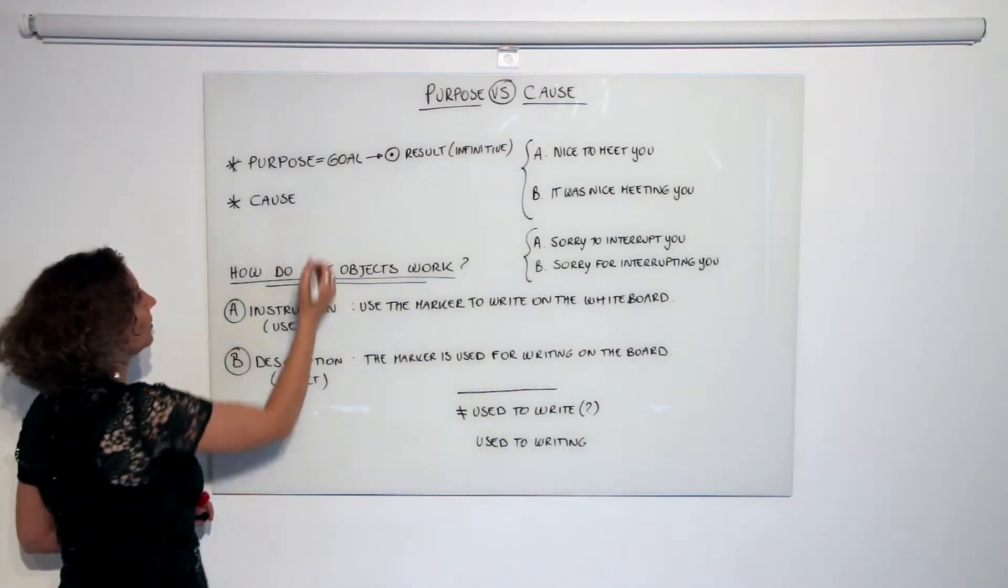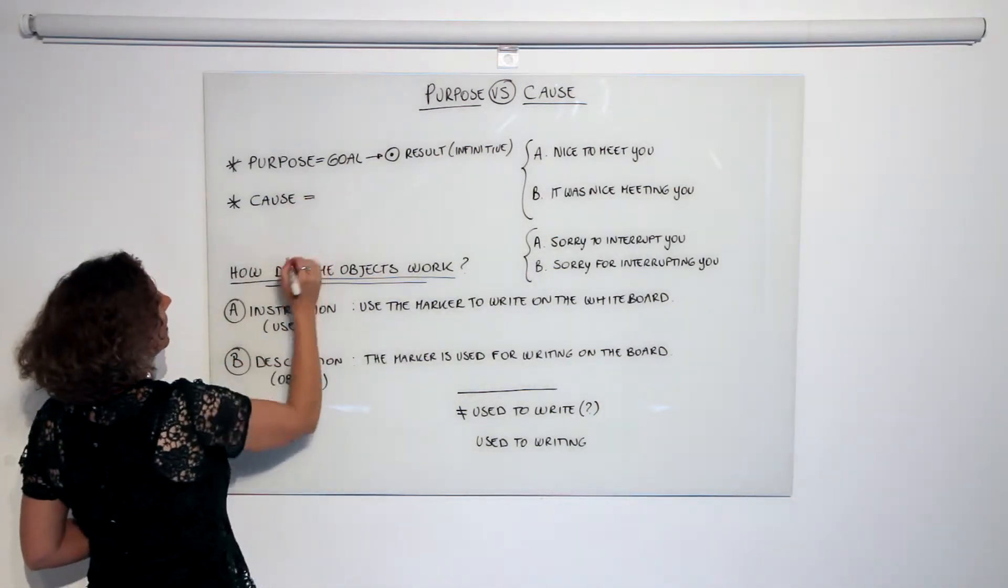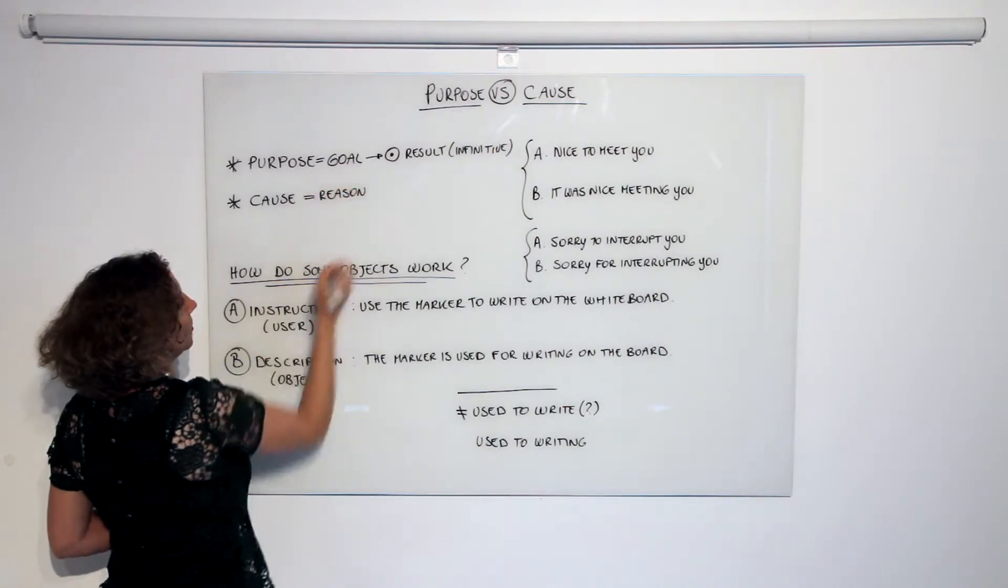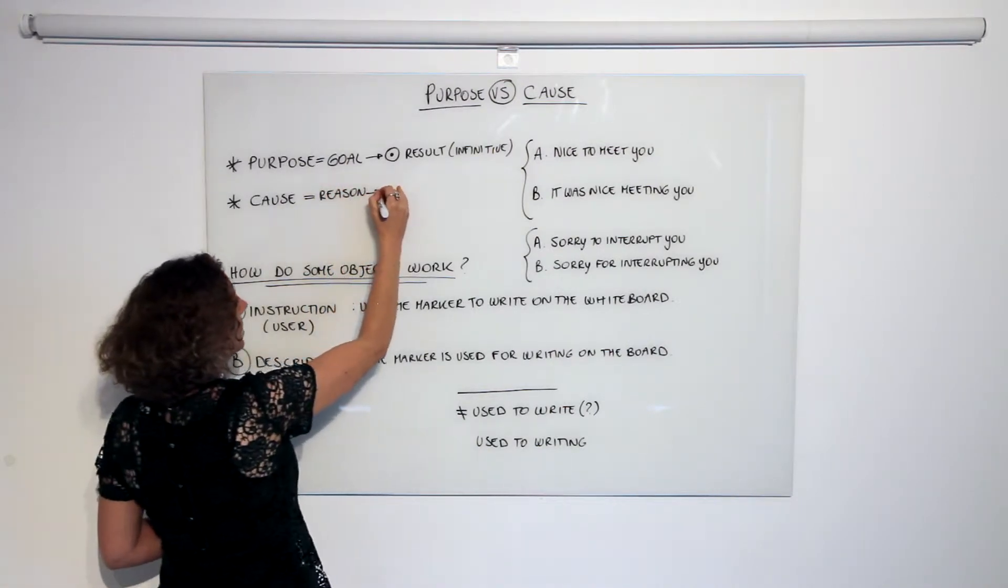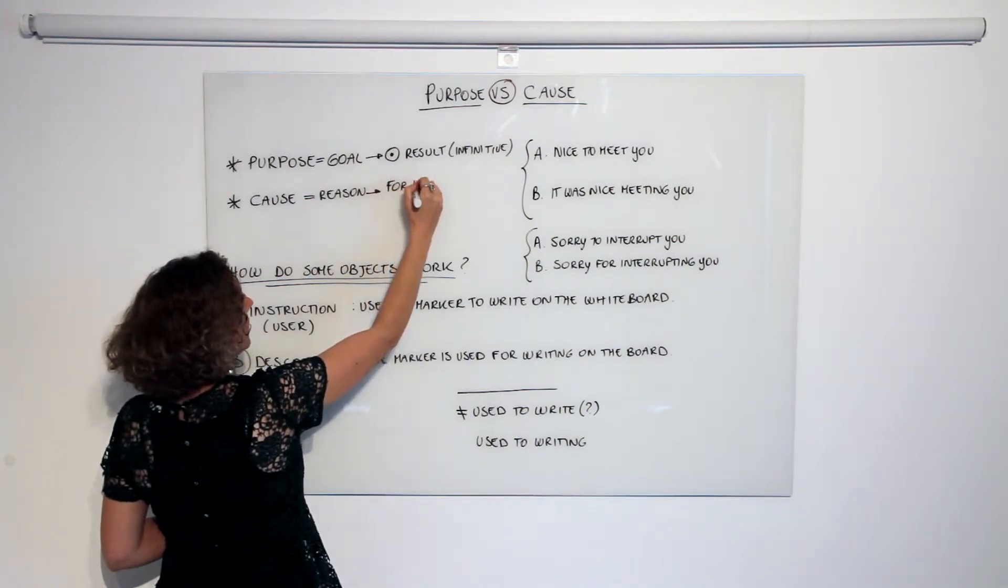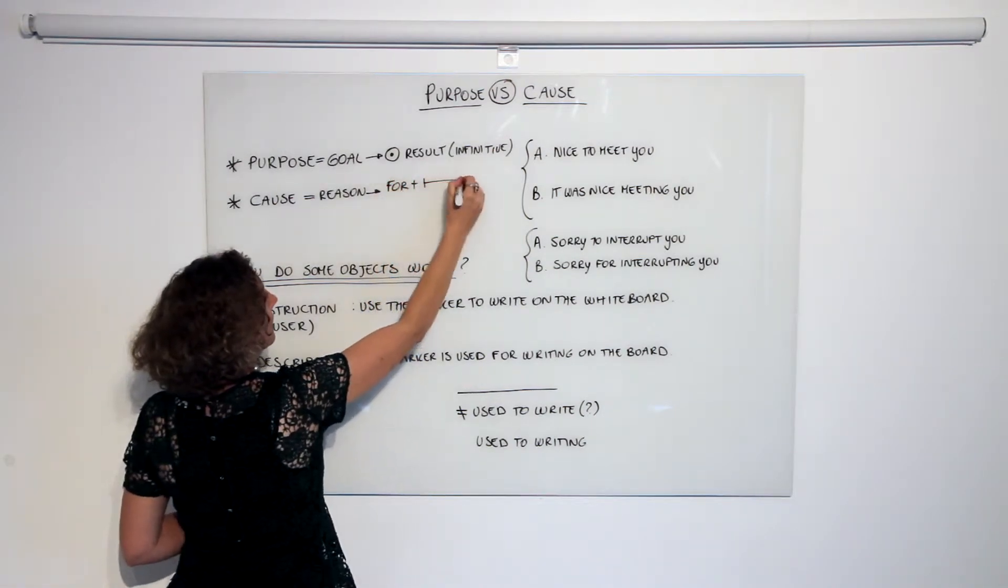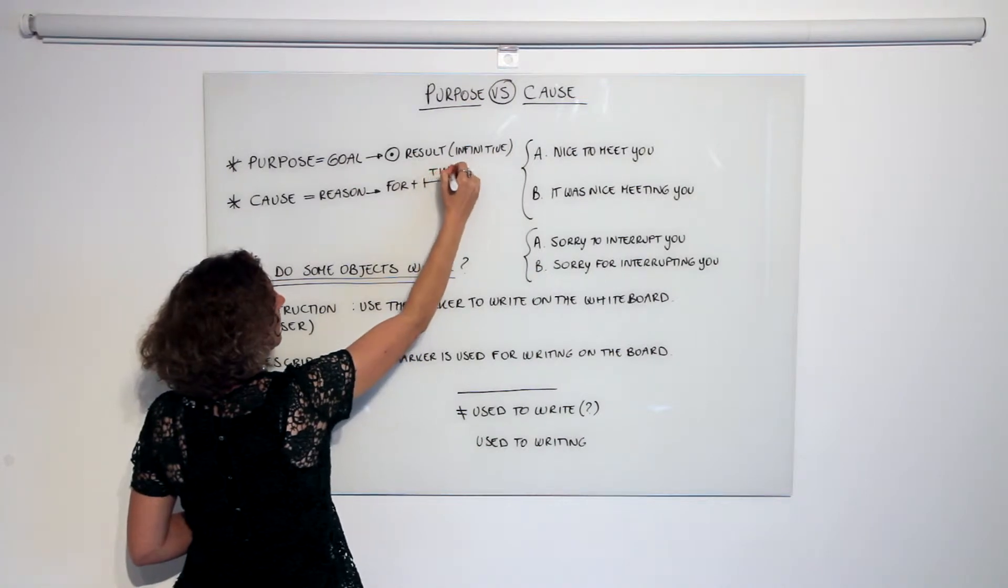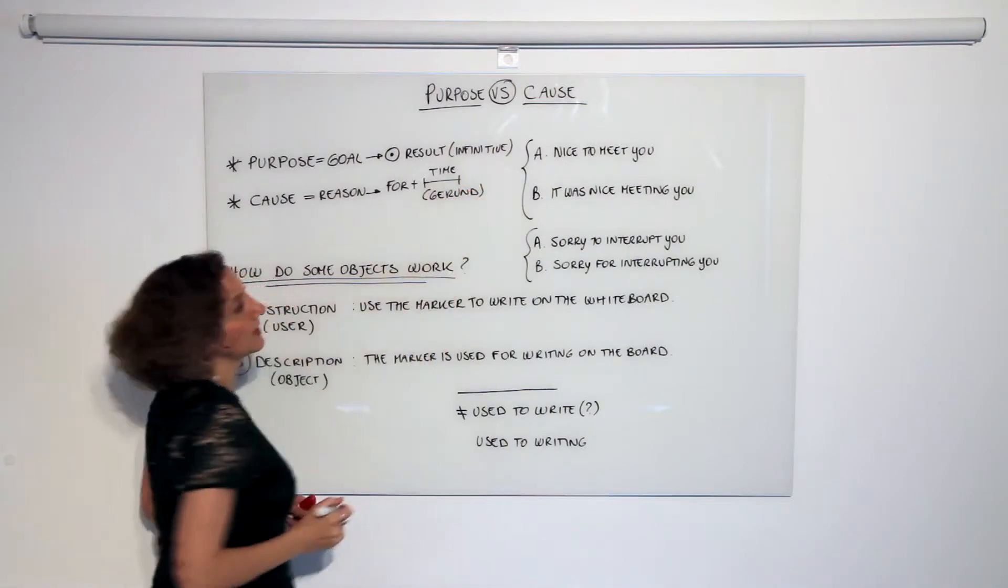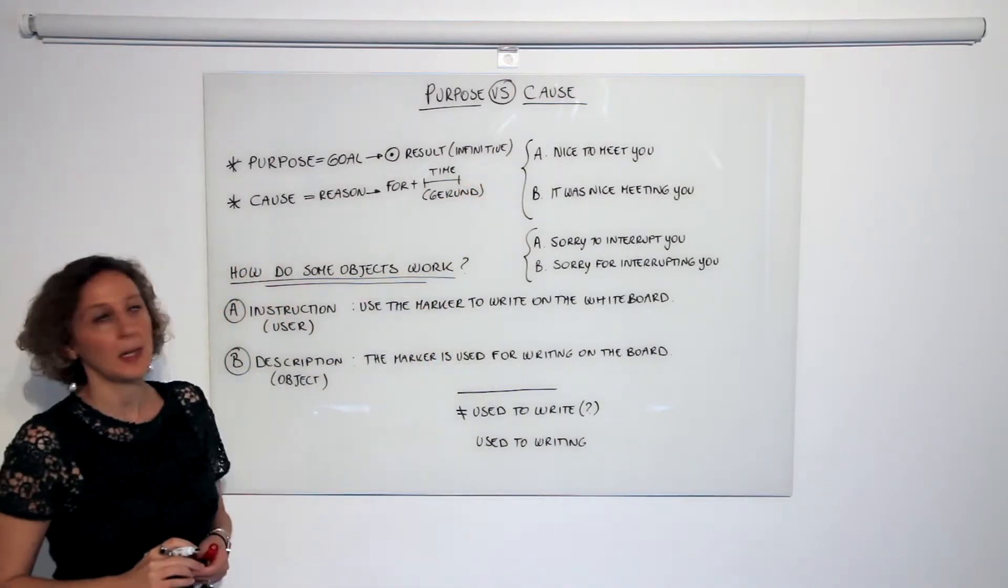Now by contrast, the cause is actually the reason for which something exists, and we express it through the use of 'for' plus gerund, exactly as we explained last time.